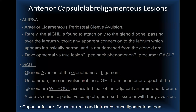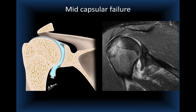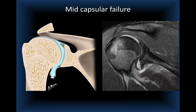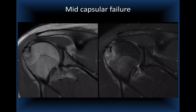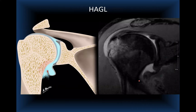Capsular failure involves mid-substance intrasubstance rents or tears. On the diagram from Dr. Skalski, the glenoid and humeral insertions are both intact, but the defect is in the middle of the hammock — the axillary pouch — a mid-capsular tear associated with the Hill-Sachs lesion. Another case with a greater tuberosity fracture shows the humeral and glenoid insertions intact while the tear occurs in the mid-hammock.